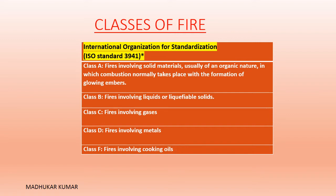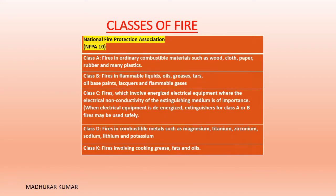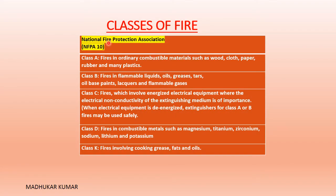One classification is missing from ISO, which is completed in NFPA 10. Under NFPA 10, Class A is fire in ordinary combustible materials such as wood, cloth, paper, rubber, and many plastics — solid carbonaceous materials. Class B here is different: it includes fire in flammable liquids, oil, grease, tars, oil-based paints, lacquers, and also flammable gases — both are included in Class B.